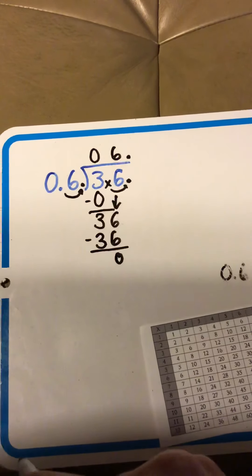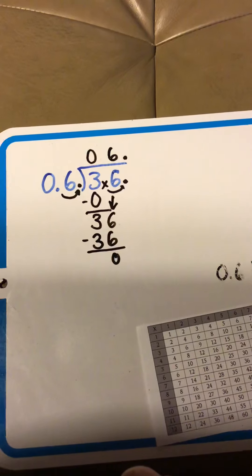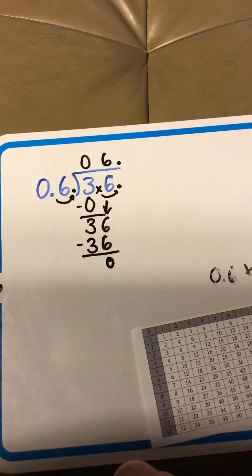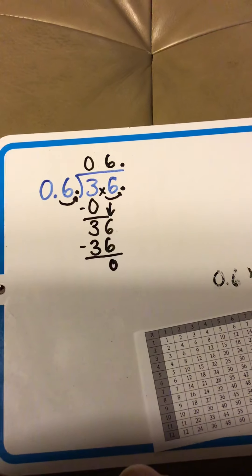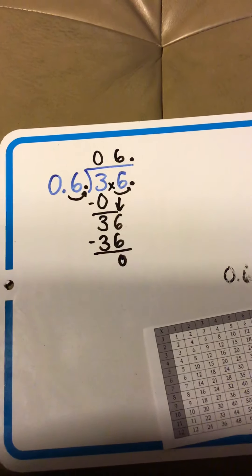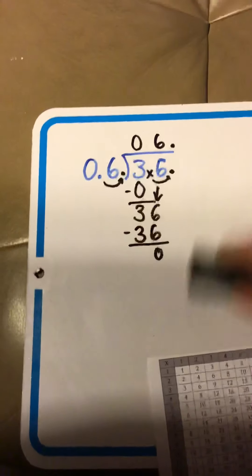Okay, so our original problem was 3.6 divided by 0.6, and the answer is 6. We have solved our first decimal at the door problem. Awesome. Let's try one that's maybe a little bit harder.